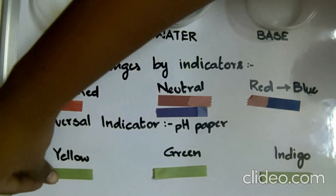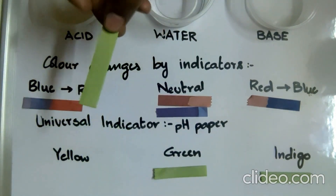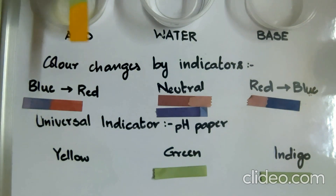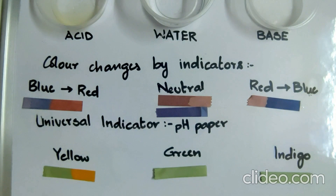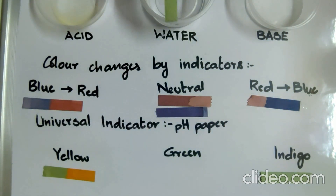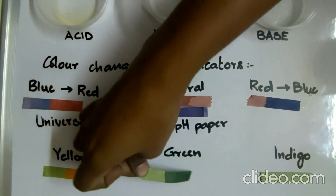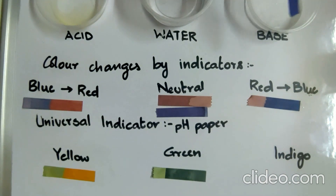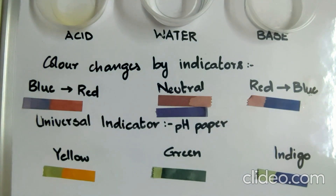The next is universal indicator — example is pH paper, which is green in color. When dipped in acid, the color changes to yellow, indicating slightly acidic; if it changes to red, it is strongly acidic. When dipped in water, the color remains the same — water is neutral, neither acidic nor alkaline. When dipped in a base, it changes to indigo, indicating strongly alkaline.